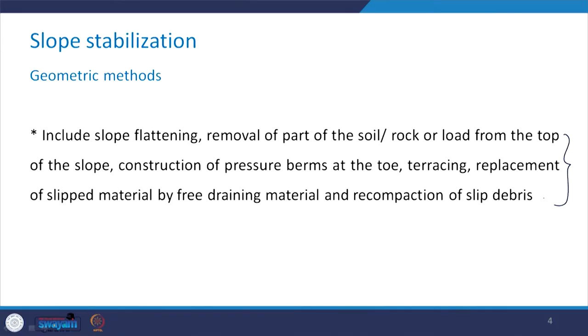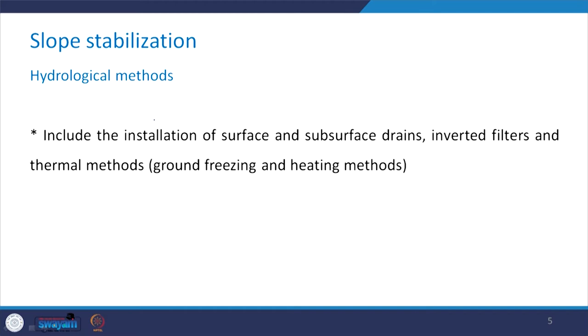The second category includes the installation of surface and subsurface drains, called hydrological methods. Inverted filters can also be provided, and thermal methods such as ground freezing and heating methods are also used in order to control the groundwater table in the field.